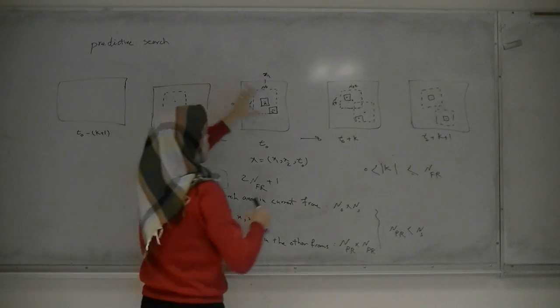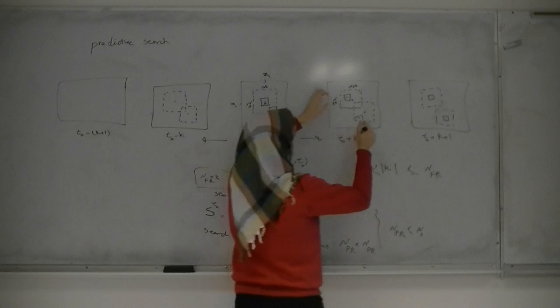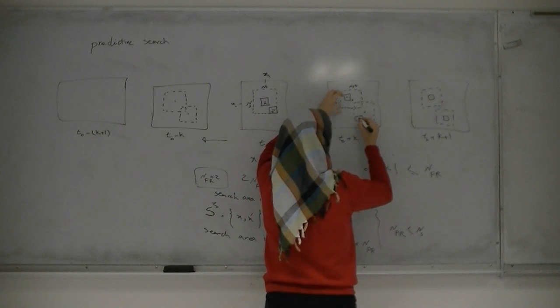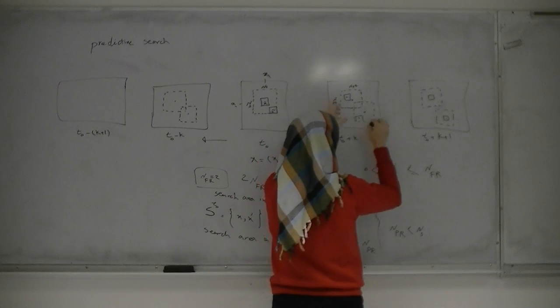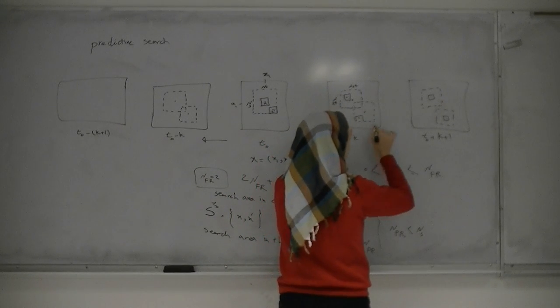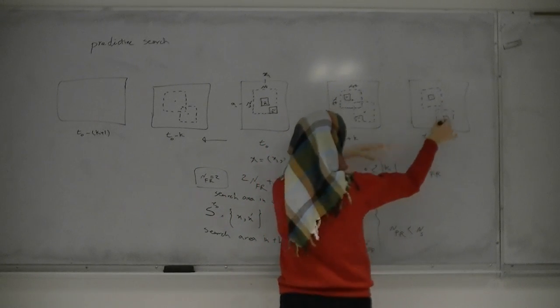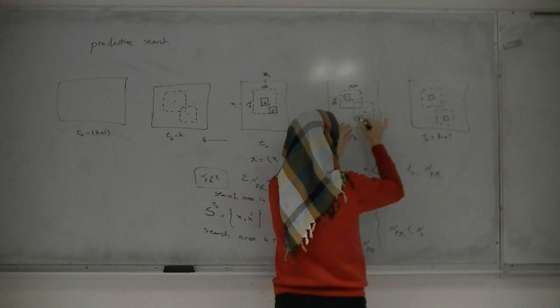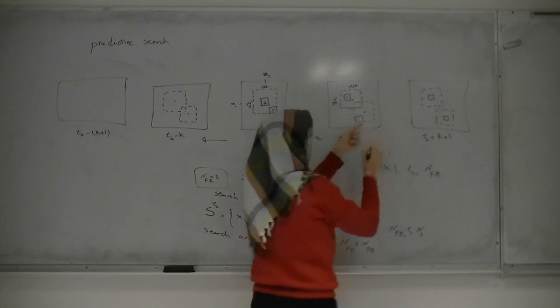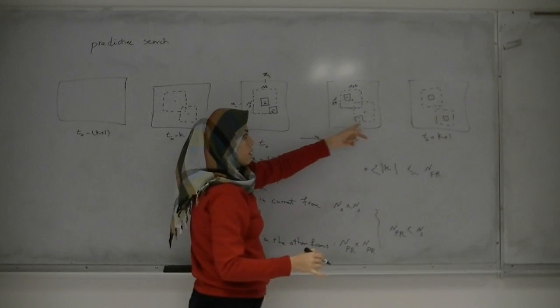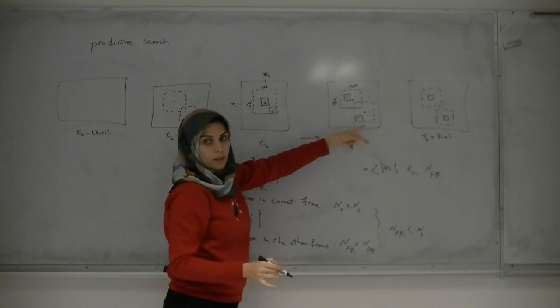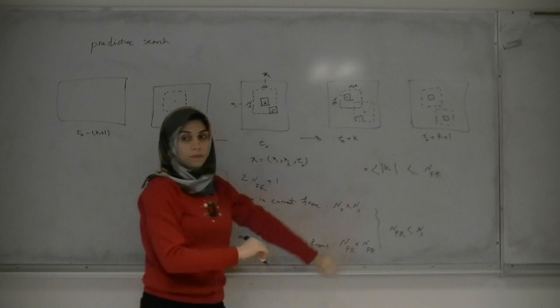This is called predictive search because we predict that the most similar block in the next frame is around the current similar block's position.